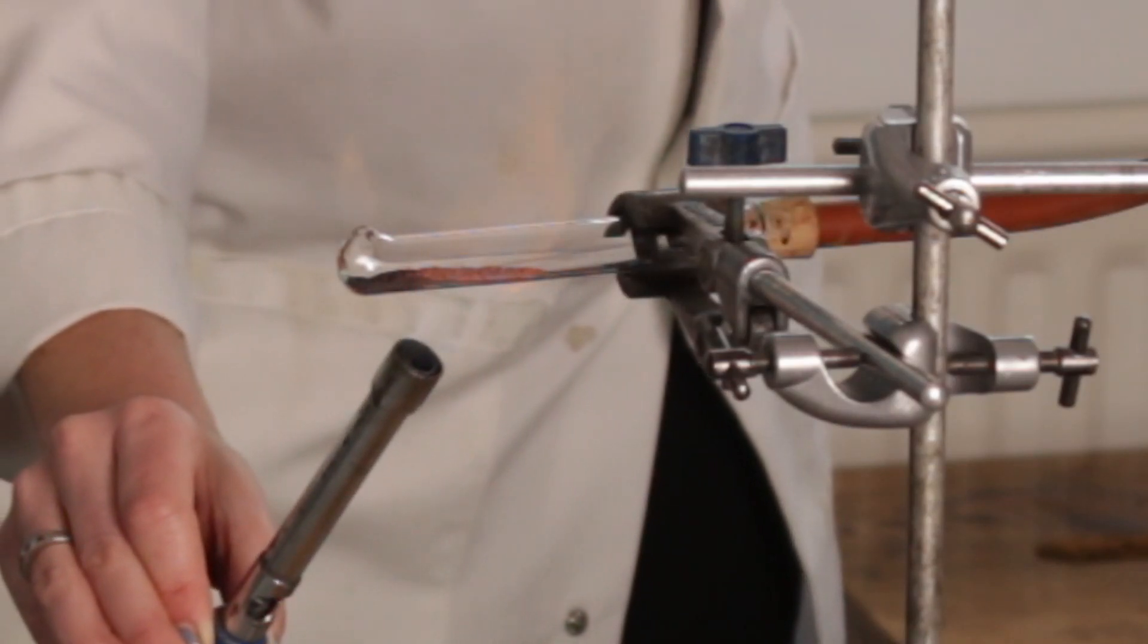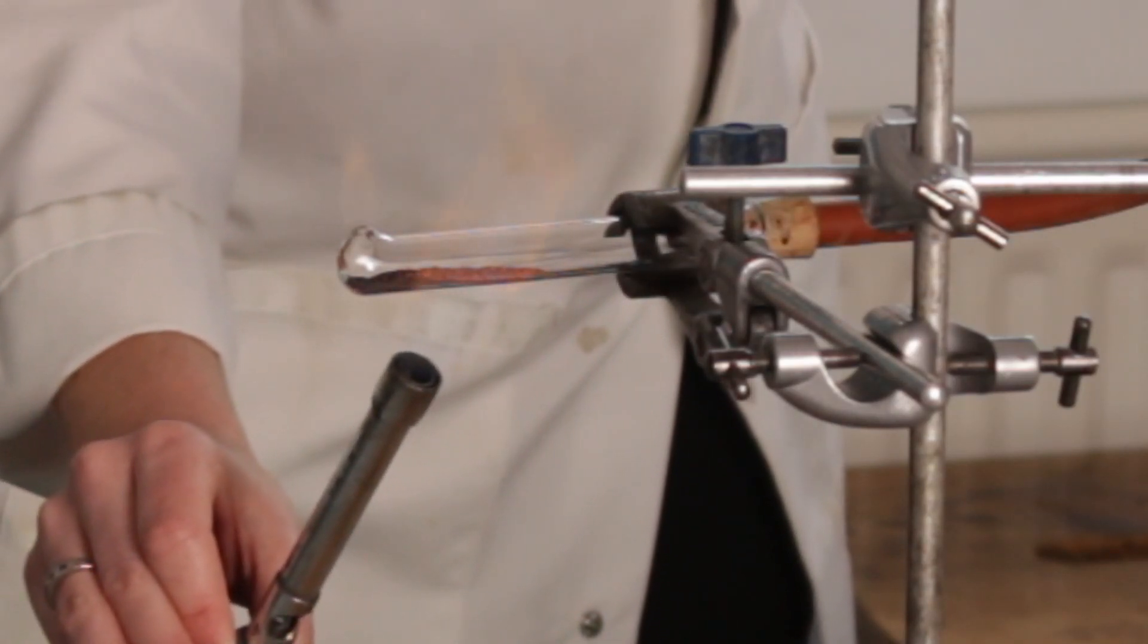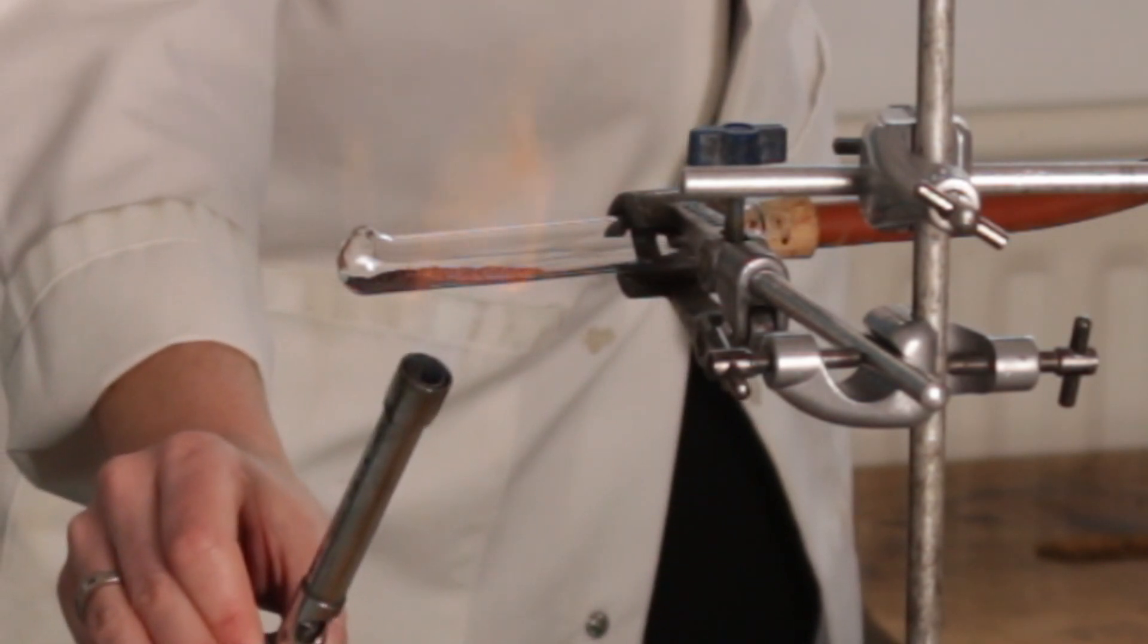So we can see there's a really nice colour change going on on that copper oxide now. About two-thirds of it has gone this lovely orange colour.